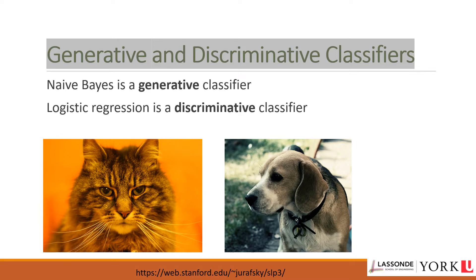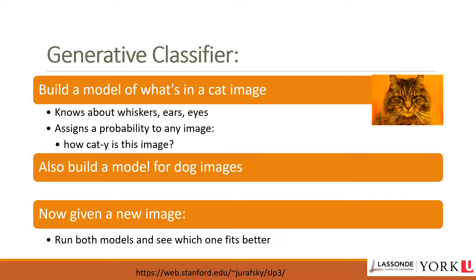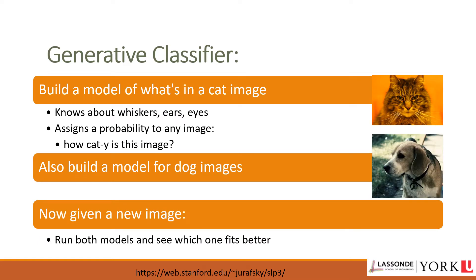To distinguish cat from dog images, a generative model would aim to understand what dogs look like and what cats look like. You would first build a model for each class — for example, a cat model that knows about ears, eyes, and other features — and assign properties to any image. Then you might literally ask such a model to draw a dog and, given a test image, ask whether the cat model or dog model better fits that image.